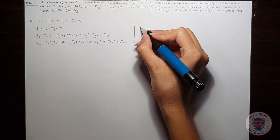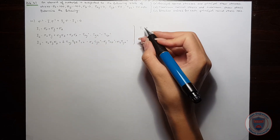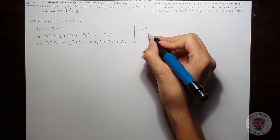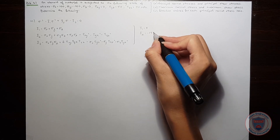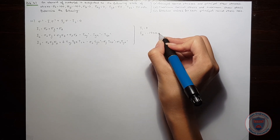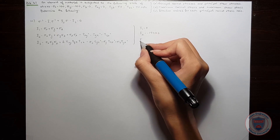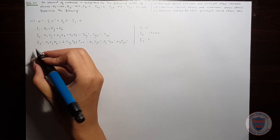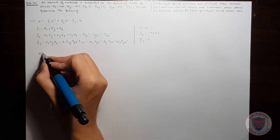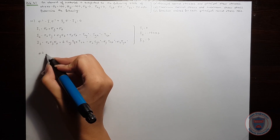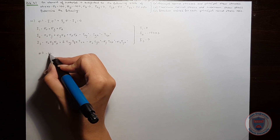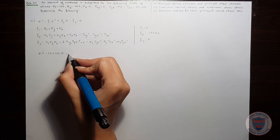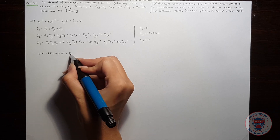we obtain I1 equal to 0, I2 equal to minus 15,000, and I3 equal to 0. So our characteristic equation becomes sigma cubed minus 15,000 sigma, which is equal to zero.